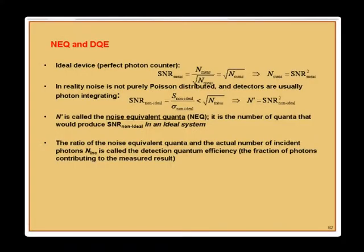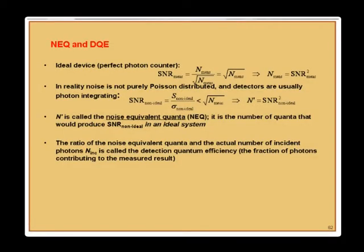An ideal device is a perfect photon counter. The signal-to-noise ratio is the number of photons divided by the square root of the number of photons. So SNR equals N-mean over square-root of N-mean. Typically, noise is not Poisson distributed unless you have photon counting or photon integrating detectors, so the SNR is less than ideal.